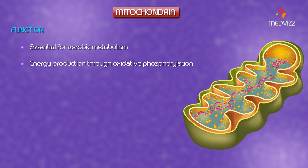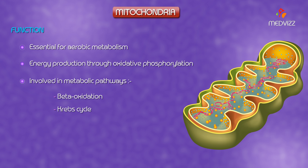Mitochondria are involved in several other metabolic pathways, including beta-oxidation, the Krebs cycle, and the synthesis of iron-sulfur clusters.